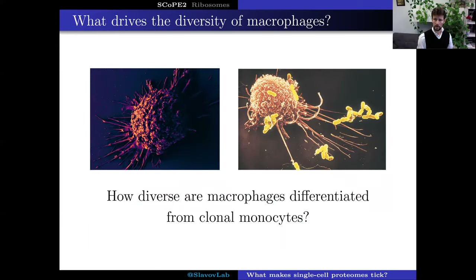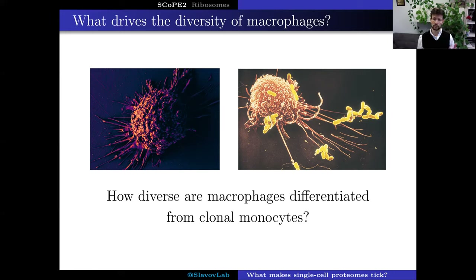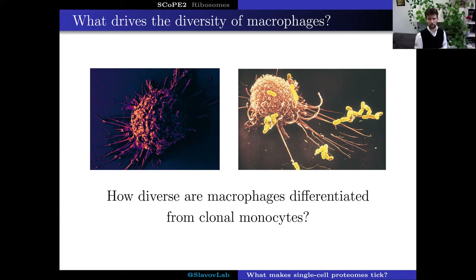We have applied our single-cell proteomic methods to a variety of different systems. One example is understanding macrophage polarization. Macrophages are innate immune cells present in all of your tissues — part of the initial immune response to pathogens and part of regenerative processes. They can have very different phenotypes: pro-inflammatory or anti-inflammatory, with major biomedical ramifications. For example, anti-inflammatory macrophages, sometimes known as tumor-associated macrophages, may prevent your immune system from effectively eliminating tumor cells.